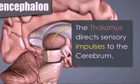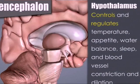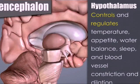Whereas the hypothalamus controls metabolic processes like temperature, appetite, water balance, and sleep.